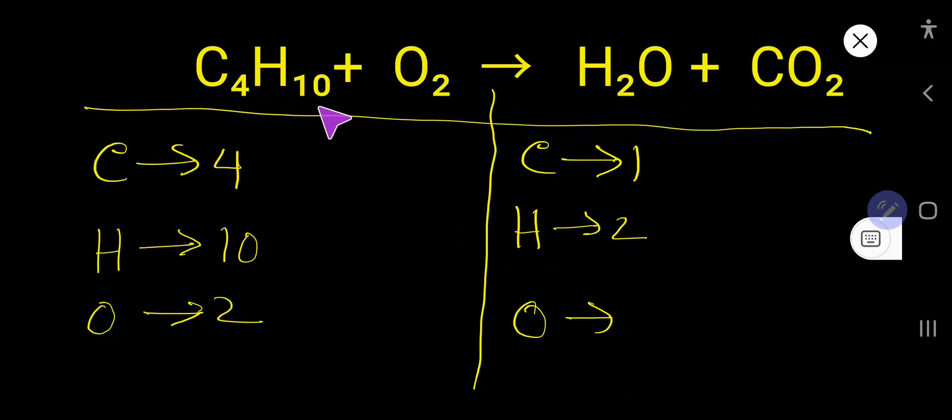How to balance C4H10 plus O2 that produces H2O plus CO2. On the right hand side, the number of carbon is 1, the number of hydrogen is 2, and the number of oxygen here is 1 and here 2. So basically we have 3 oxygen. On the left hand side we have 2.